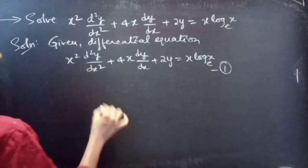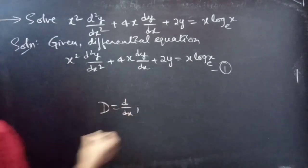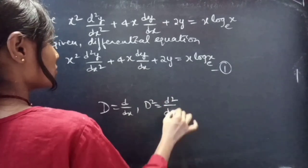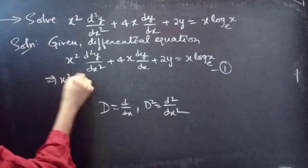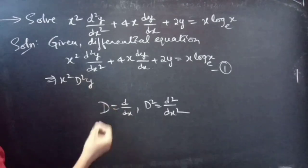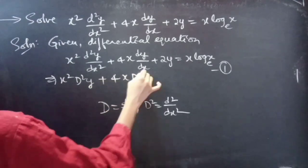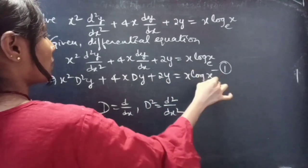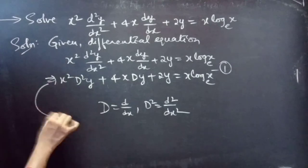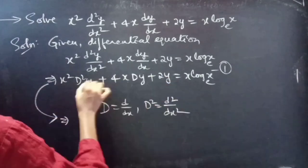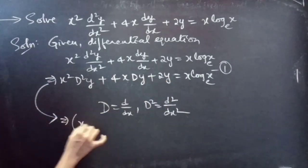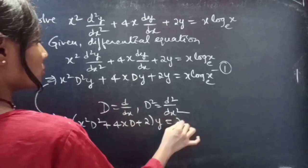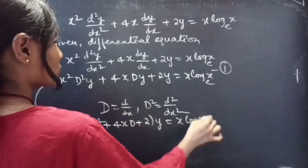We are given a differential equation with variable coefficients. We will reduce this differential equation to one with constant coefficients. We know that D is a differential operator with independent variable x, so D² = d²/dx². We can rewrite the given equation as (x²D² + 4xD + 2)y = x log x.